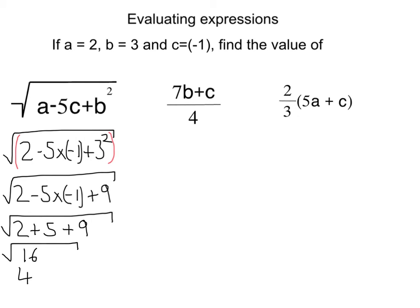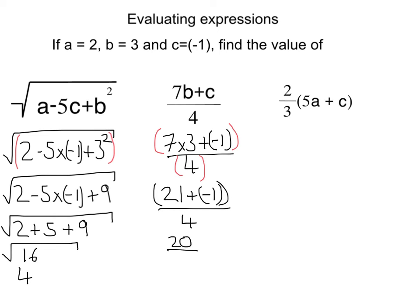Let's move on to the next one. 7b plus c all over 4. Put my numbers in: 7 times 3 plus negative 1 over 4. Like that square root, there is imaginary brackets on the top and bottom, so I have to sort out what's inside the brackets before I do the division. 7 times 3 is 21, plus negative 1, all over 4. 21 plus negative 1 is the same as 21 take away 1, so that's 20 divided by 4, which gives you the answer of 5.